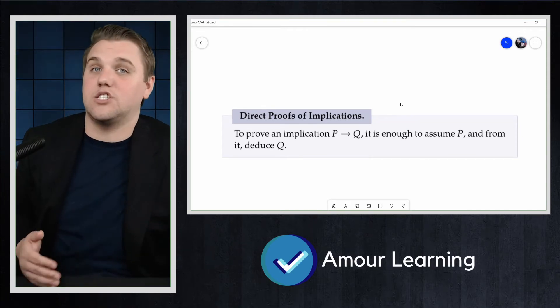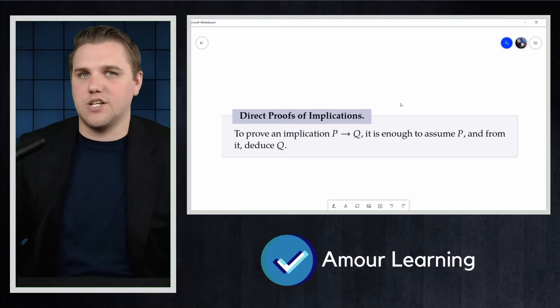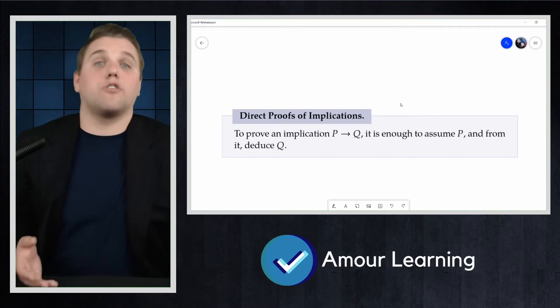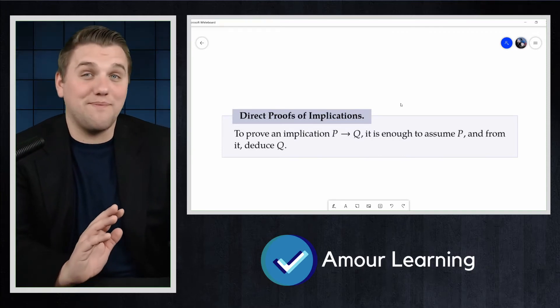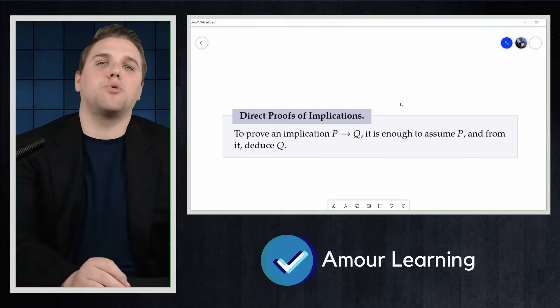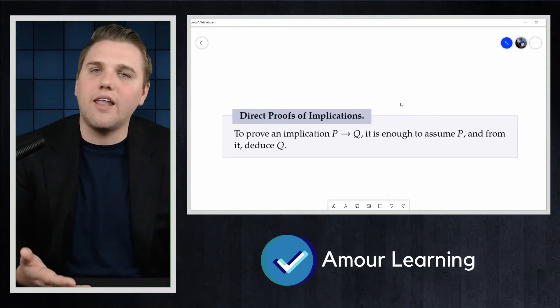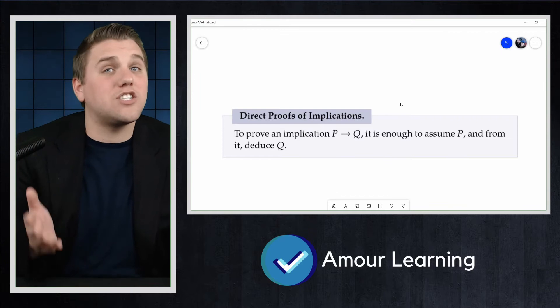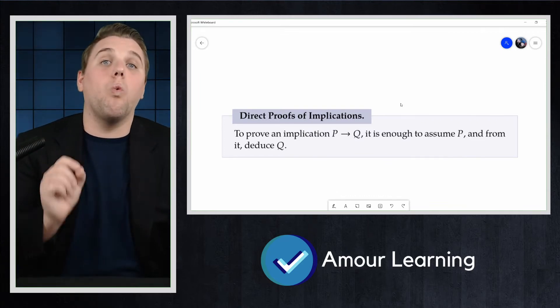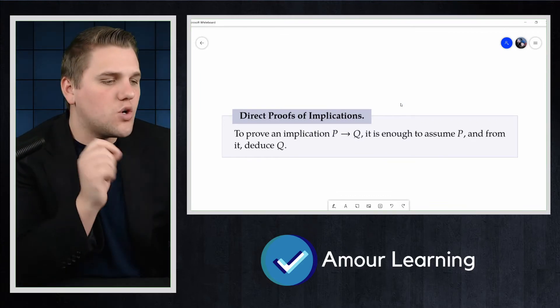There are other techniques to prove statements and implications that we will encounter throughout our studies in this course. New proof techniques are discovered all the time. Direct proof is the easiest and most elegant style of proof and has the advantage that such a proof often does a great job of explaining why the statement is true. Let's do an example together.